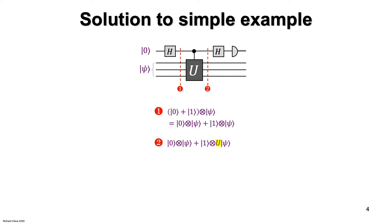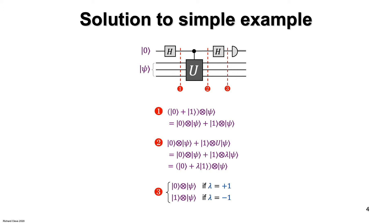Since psi is an eigenvector of U with eigenvalue lambda, we can write the state like this, and the state simplifies. Notice that the control qubit is either the plus state or the minus state, depending on the sign of lambda. Therefore, the second Hadamard gate permits us to distinguish between the two cases — between the plus state and the minus state — by a measurement in the computational basis. We have just solved a special case of the phase estimation problem.